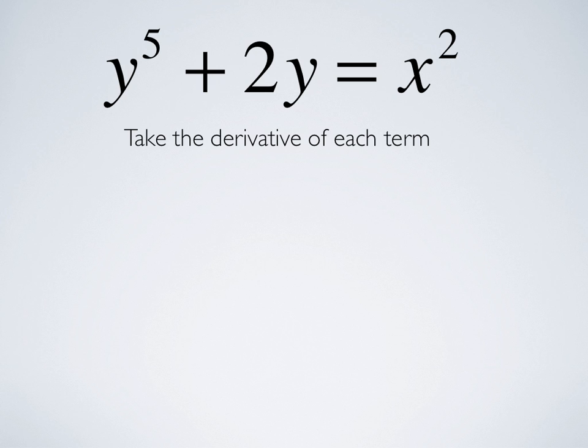So, taking the derivative of each term, starting from the left, d dx of y to the fifth is 5y to the fourth times dy dx. So, again, that's just the chain rule.